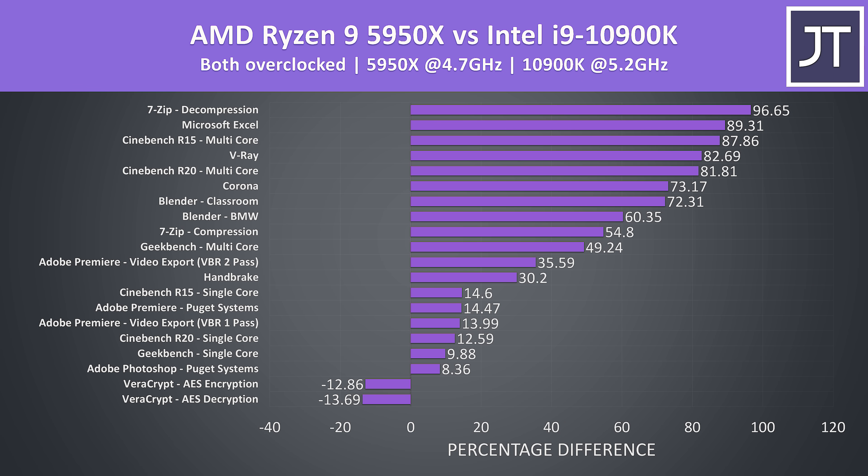With both processors overclocked, the margins increase for the most part, with a larger lead to the Ryzen 9 5950X in most applications tested. VeraCrypt was still ahead on the i9, but for the most part we're just getting more performance out of the 5950X by overclocking it compared to overclocking the 10900K, at least in multicore. The i9 closes the gap in some single core tests, as its 5.2GHz all core overclock is closer to its 5.3GHz single core turbo boost, compared to the 4.7GHz on the 5950X which is 200MHz behind its 4.9GHz max boost clock.